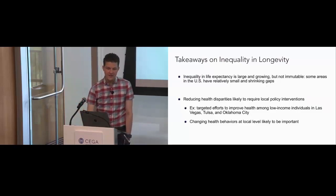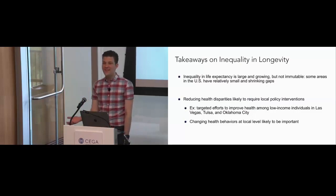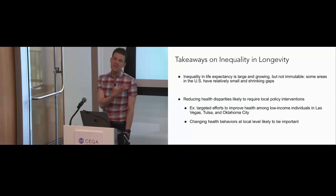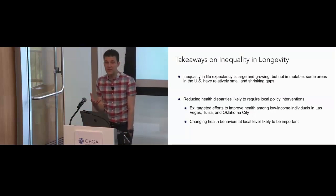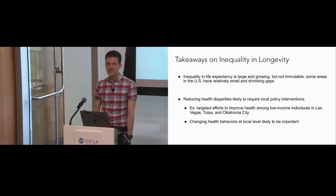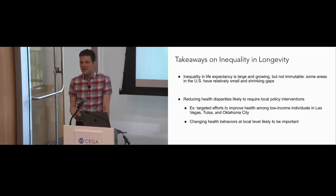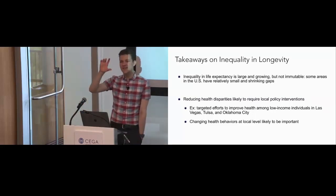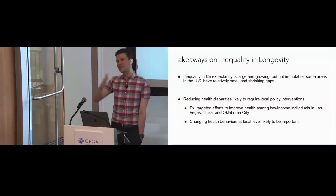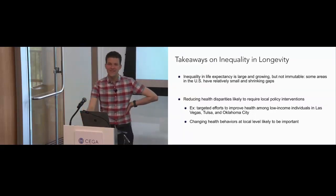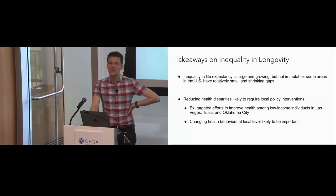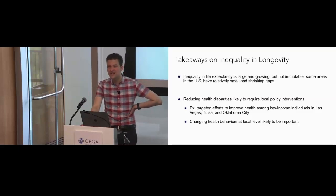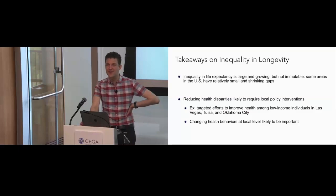Question: does this include children or adults? This is conditional on reaching age 40, because we need a measure of adult income to do the method we're studying. It would be interesting to ask what is the expected life expectancy of a child at birth conditional on their parents' income, but that data isn't yet available — the people for whom we have linkages between parental income and children just haven't lived long enough. You'd have to wait 30 years, or possibly use Scandinavian countries' data.